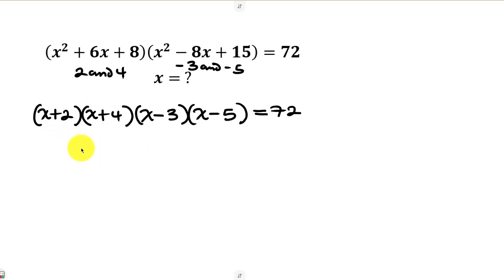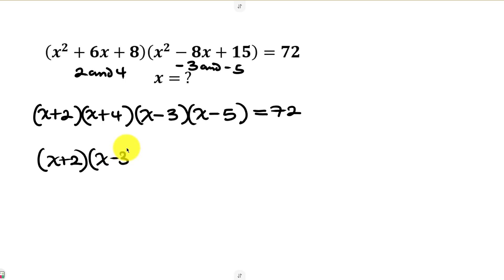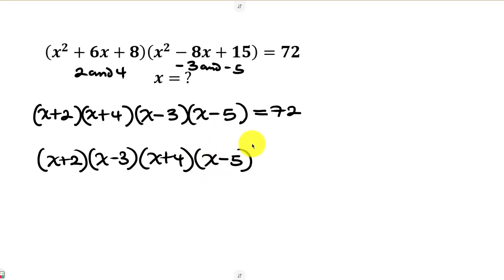This shows that I need to rearrange what I have on the left-hand side. So I'll pair (x + 2) with (x − 3), and (x + 4) with (x − 5). This rearranged product is still equal to 72.